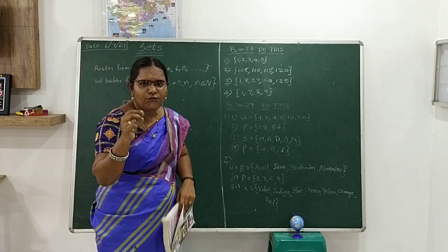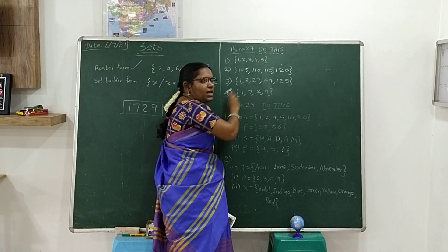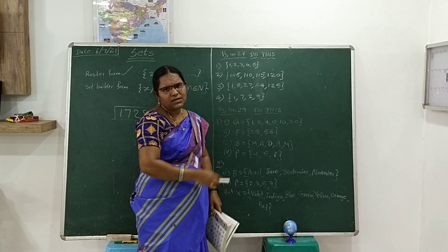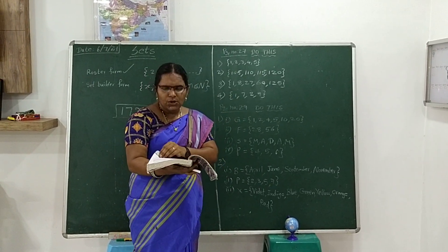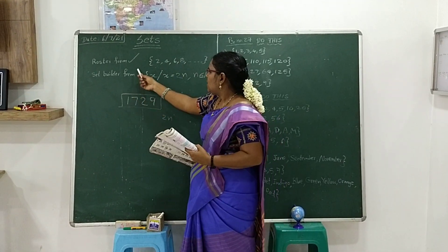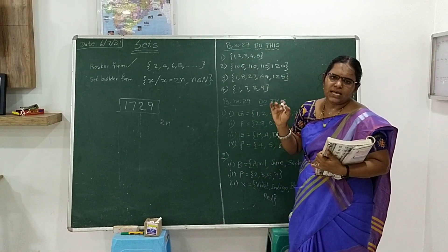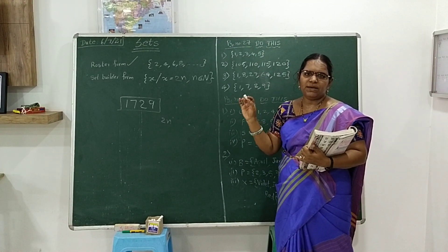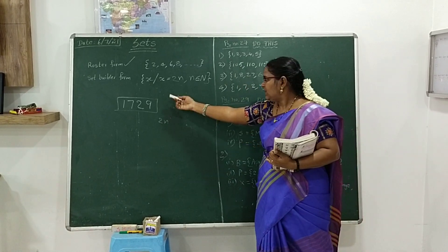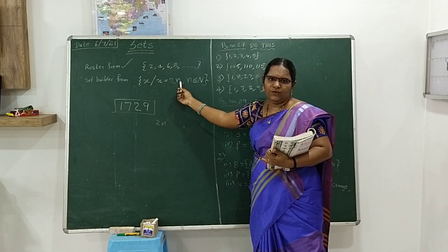They asked for the set of digits in the Ramanujan number 1729. We write the digits separated by commas: 1, 7, 2, 9. Now let us look at questions based on roster form and set builder form. Roster form means writing elements separated by commas. Set builder form means indicating with one variable and the common rule.